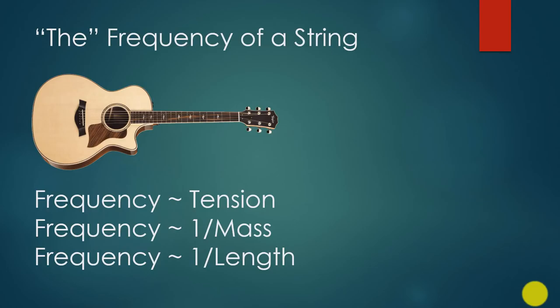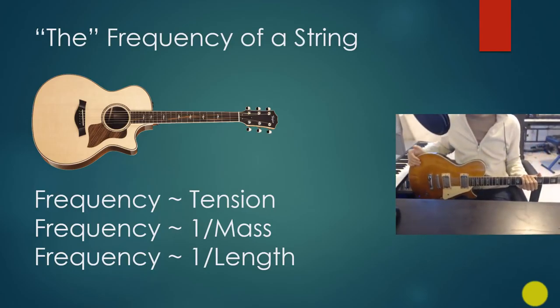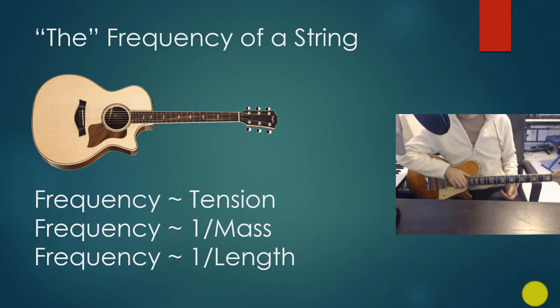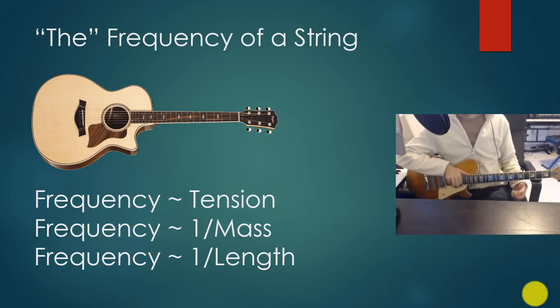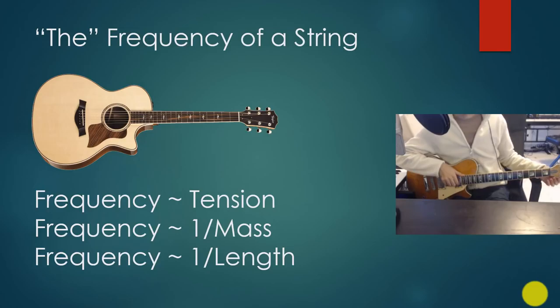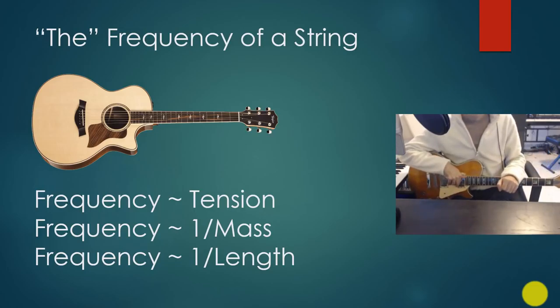We can demonstrate this easily using a guitar. I've prepared an electric guitar here. Let's start with tension. The more tension you put on the string the higher its frequency will go. The guitar has tuning pegs on the side that can be used to increase or decrease the tension, and you can immediately hear the change in pitch. Here's the high open E string and its tuning peg — I can decrease the tension and you can hear the frequency going down.